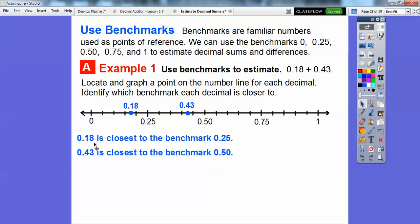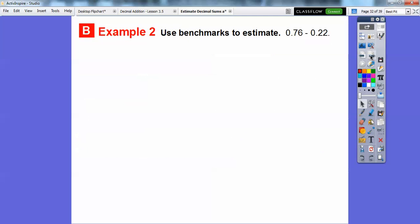18 hundredths is closest to the benchmark of 0.25, and 43 hundredths is closest to the benchmark of 0.50. This one's closer to this benchmark than to that one. So when we add these, 0.25 plus 0.50 gets us 0.75 or 75 hundredths.